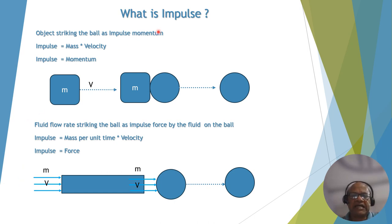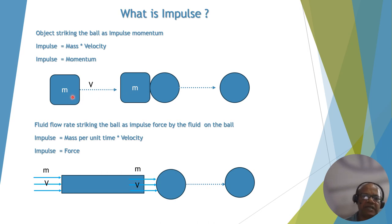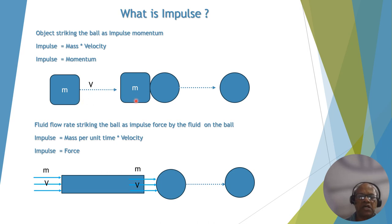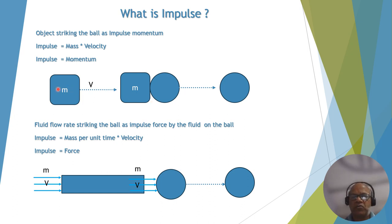Let's understand impulse with an example. Consider a mass of object moving with velocity V. It strikes a stationary ball. The object has mass M and velocity V, so impulse equals mass into velocity — this is the momentum. The stationary ball gains motion because of this impulse. Since the action is once, it is considered impulse as momentum.